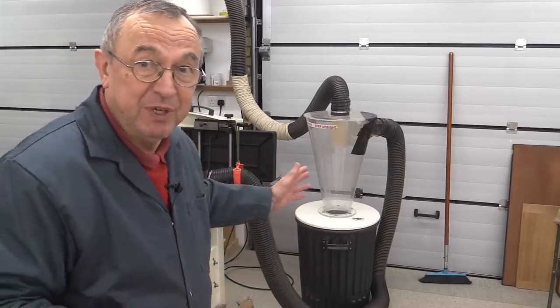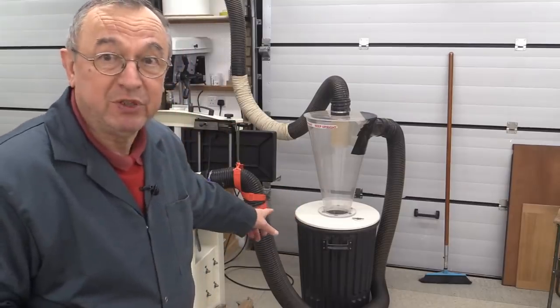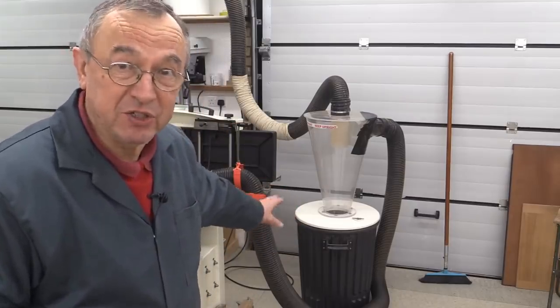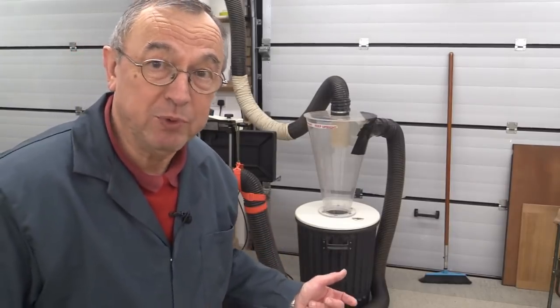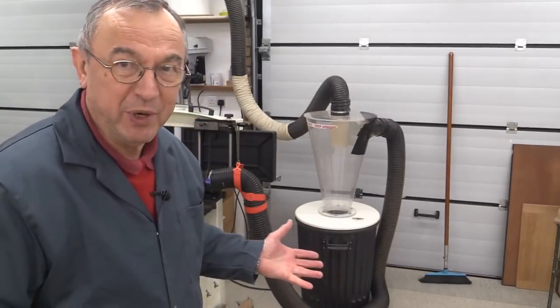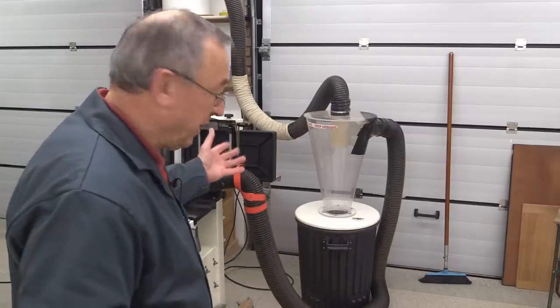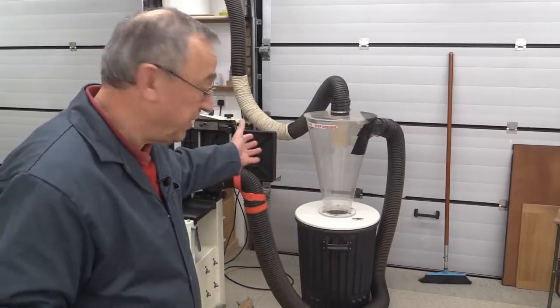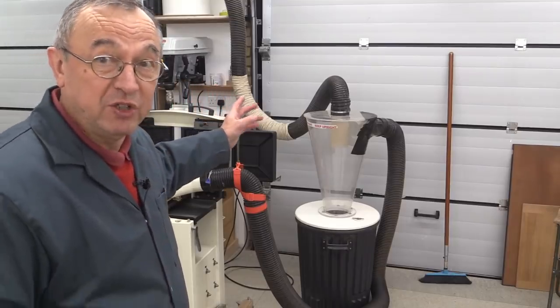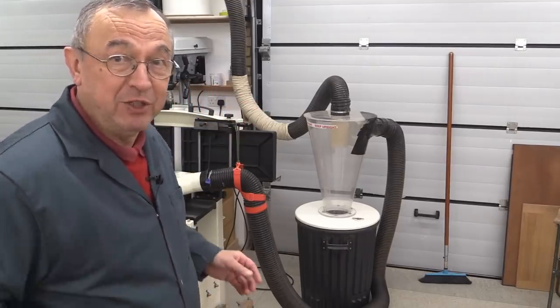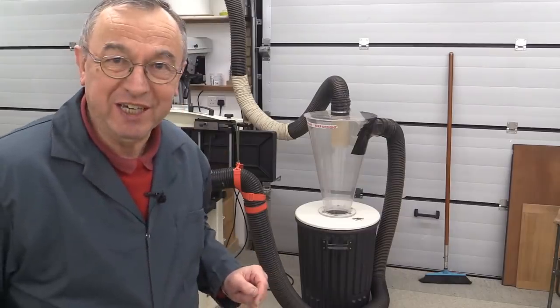So by intercepting them, you end up with the chippings in the drop box. In my case, it's a dustbin. Those can be easily emptied on the compost heap or got rid of in some other way. One of the important points about using an interceptor like this is that the bag in your extractor will last a very long time. I change that bag once a year.